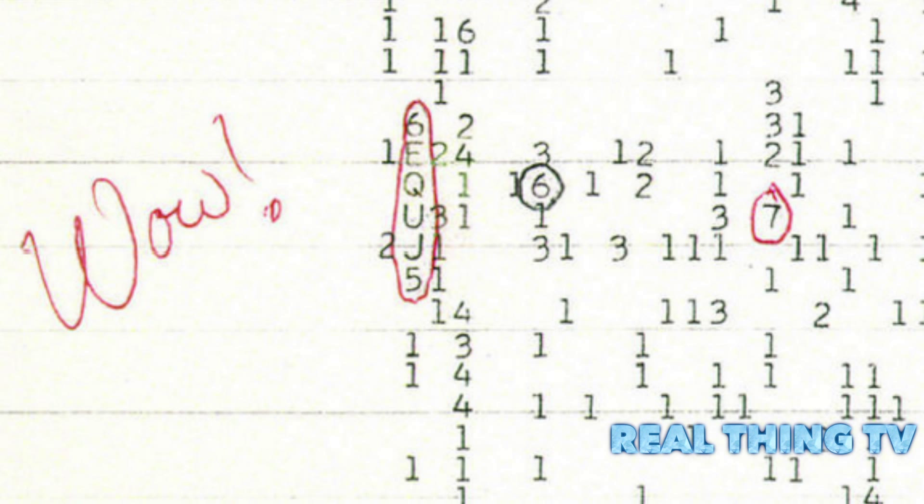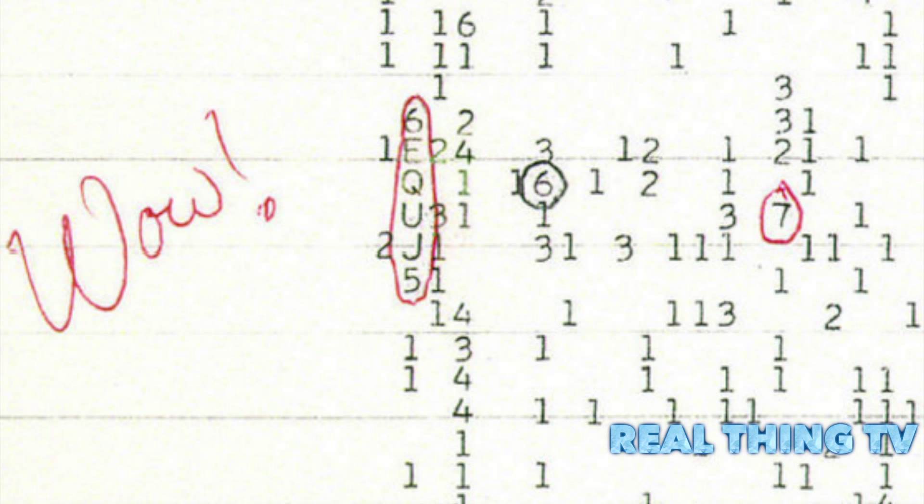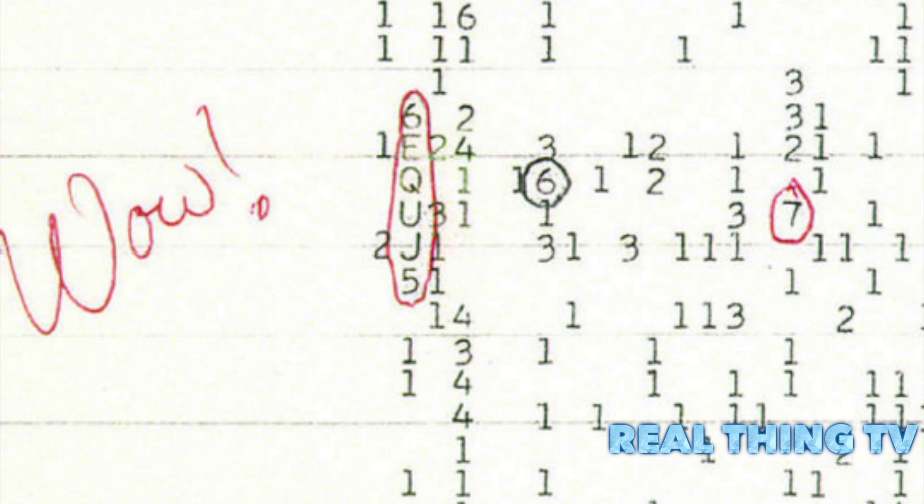Similar readings of something known as peritons excited astronomers earlier this year. It was later discovered, however, that the signals were from microwave ovens on Earth being opened in the canteens of the observatories.